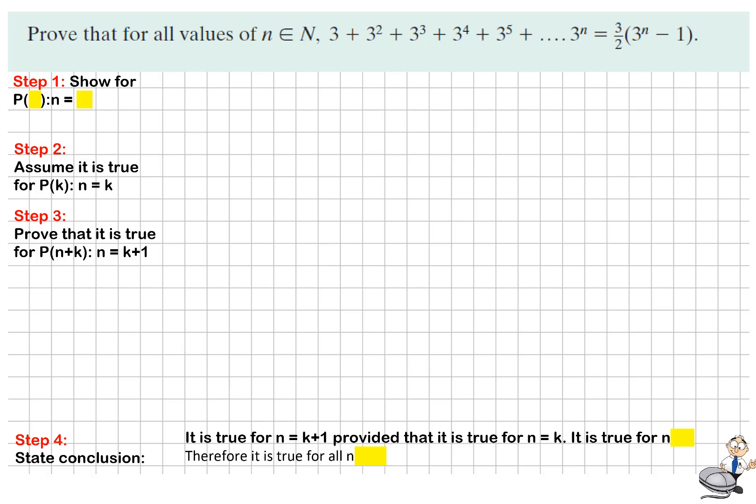We're going to follow these four steps that we always use in proving by induction. In step 1, we choose the lowest value of n and we're going to prove it for that. The lowest or first of the natural numbers is 1. So we're going to show that P(1), for n equals 1, when we solve it in here, will give the output of 1.